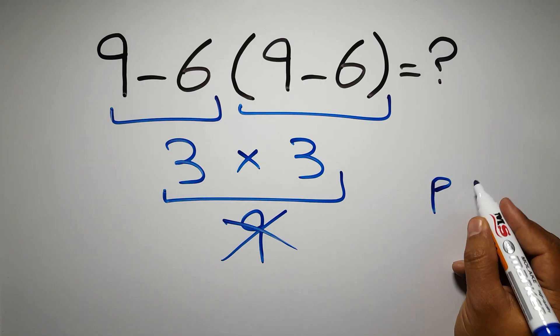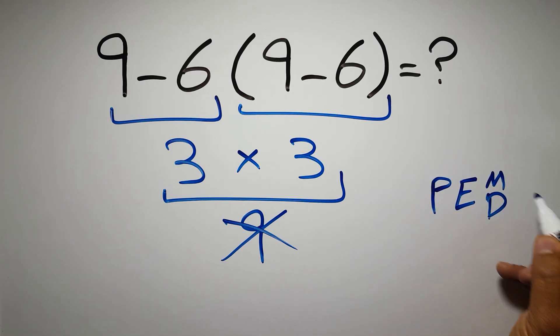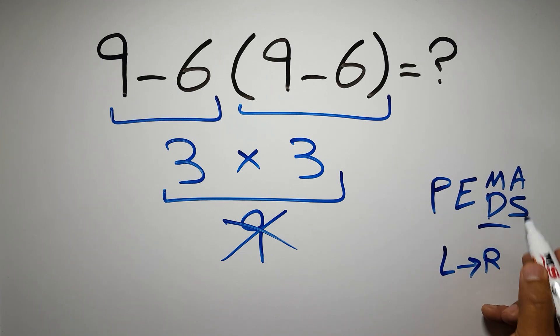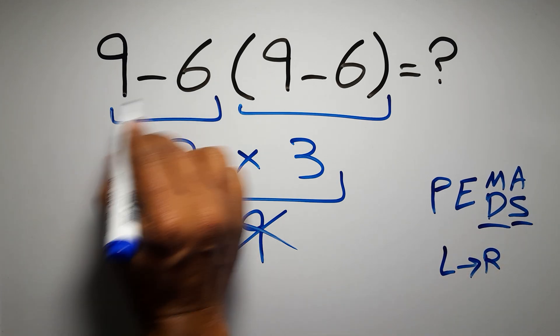Then exponents, then multiplication or division, and the final addition or subtraction. Remember that multiplication and division have equal priority, and we have to work from left to right. The same applies to addition and subtraction.